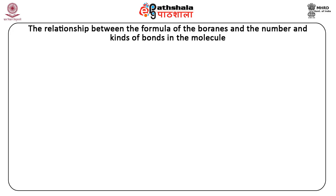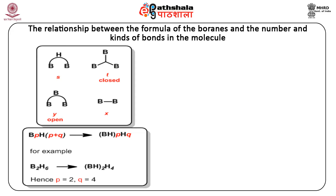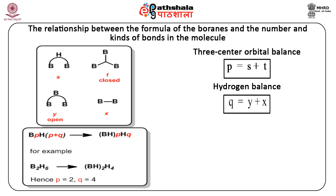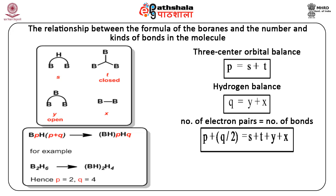Now we shall move on to the relationship between the formula of boranes and the number and kinds of bonds in the molecule. First, the sum of the numbers of three-center boron-hydrogen-boron bonds (labeled S) and the number of three-centered boron-boron-boron bonds (labeled T) must equal the number of boron-hydrogen units, P. Secondly, each boron has at least one terminal hydrogen, and the remaining hydrogen atoms Q must be divided between bridges (labeled S) and additional boron-hydrogen terminal bonds (labeled X). All electron pairs must be used in bonding, the total bond pairs being the sum of S, T, Y, and X.